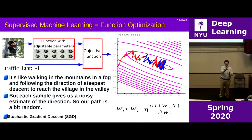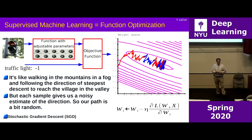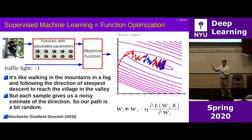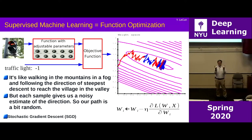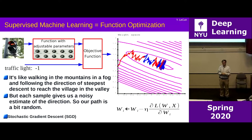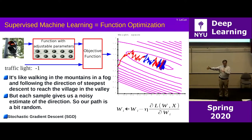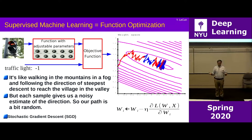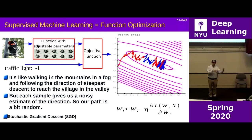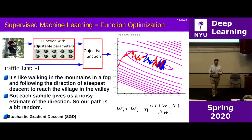You compute the average of that cost function — which is a scalar — over a training set of pairs of inputs and outputs. The function you want to minimize with respect to the parameters is that average. So you want to find the value of the parameters that minimizes the average error between the output you want and the output you get, averaged over the training set.